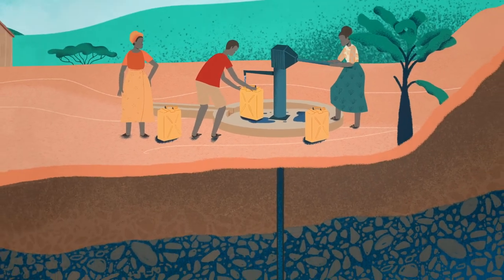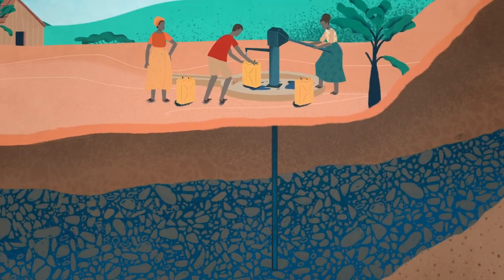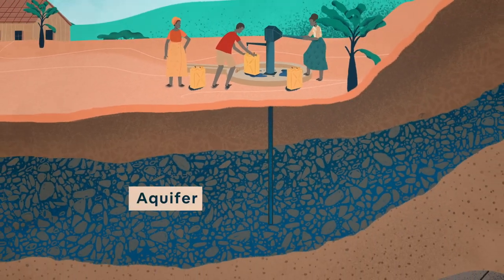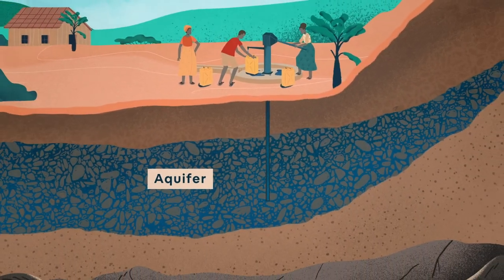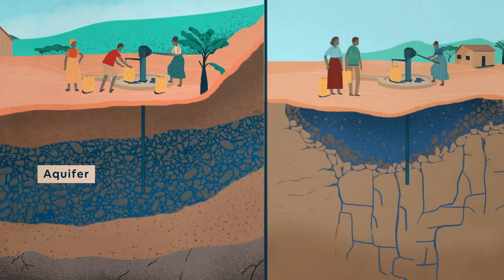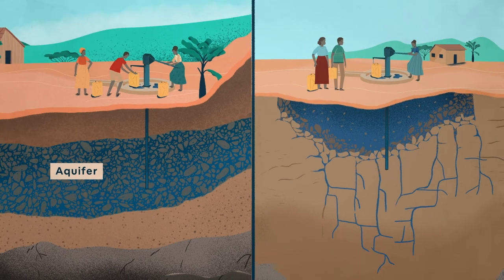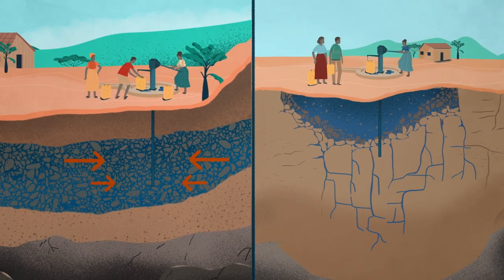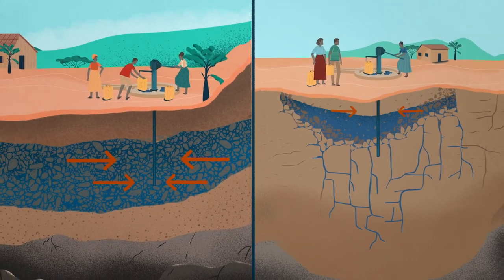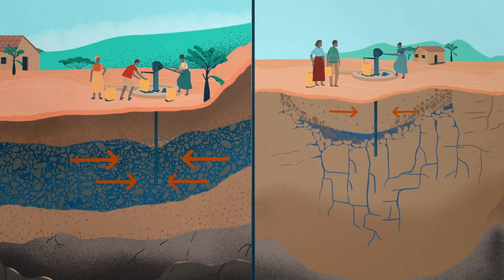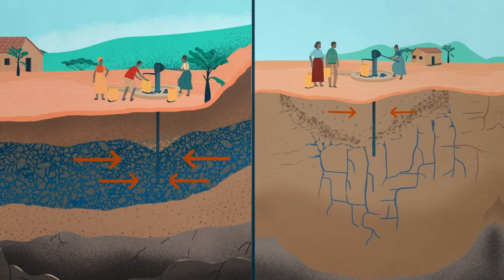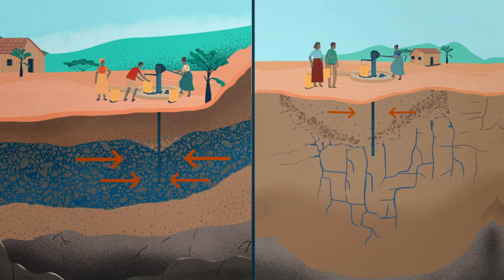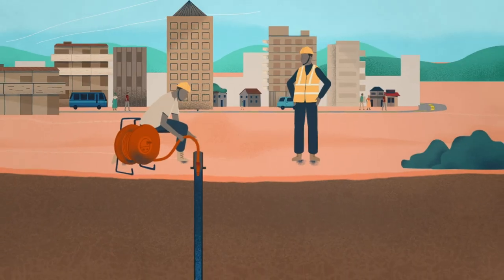Groundwater is the water that is stored underground in what are called aquifers. Some aquifers contain more groundwater than others, and some aquifers release groundwater more easily than others.